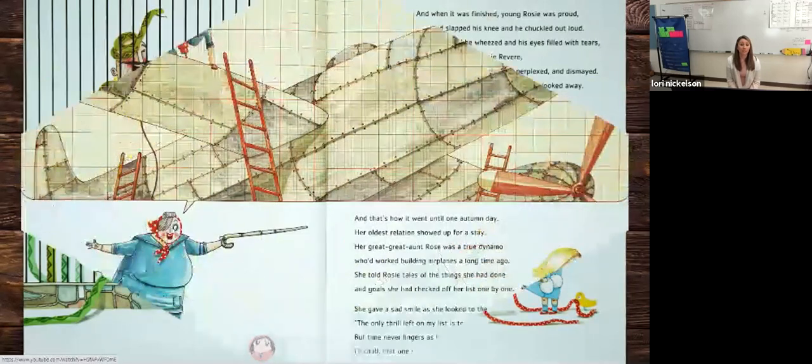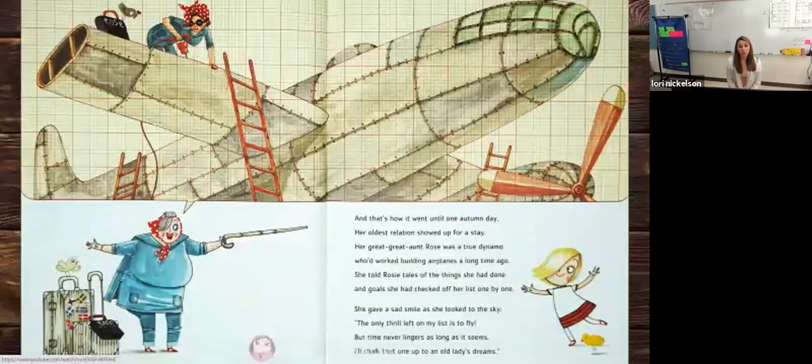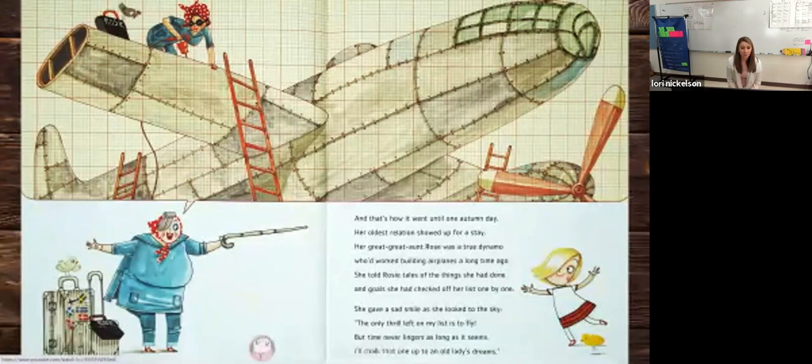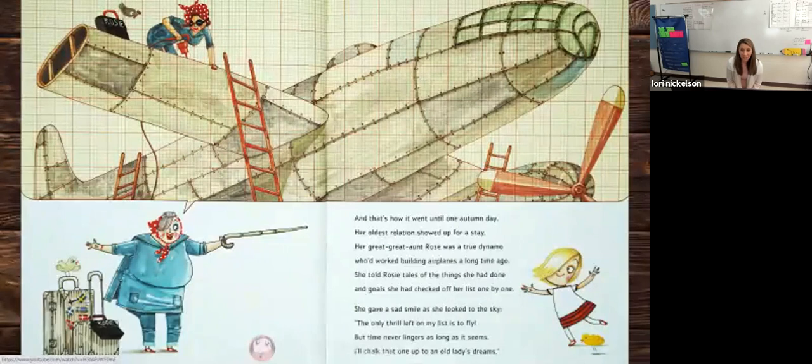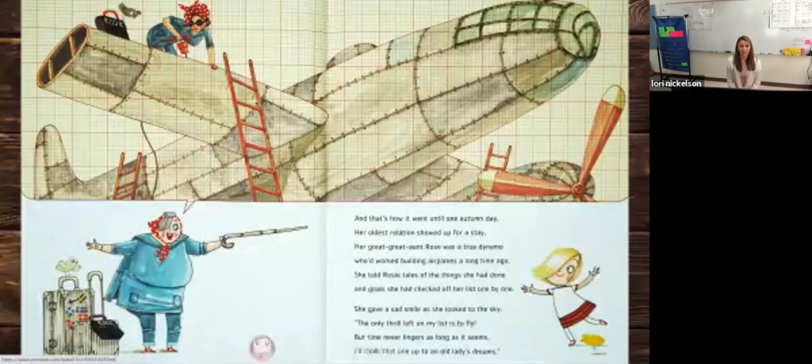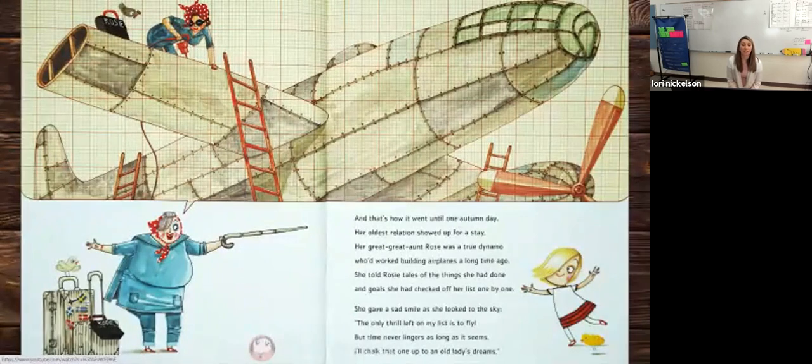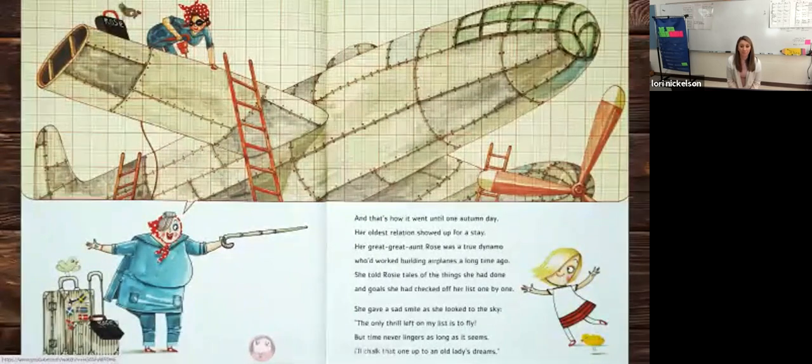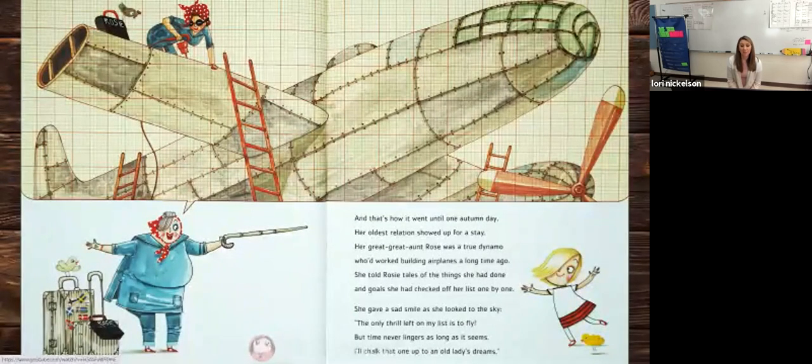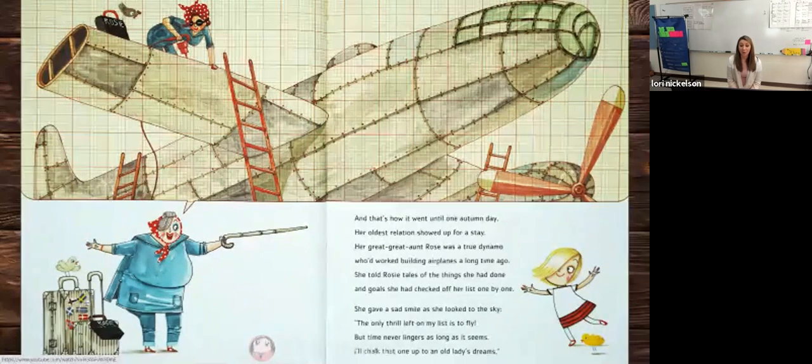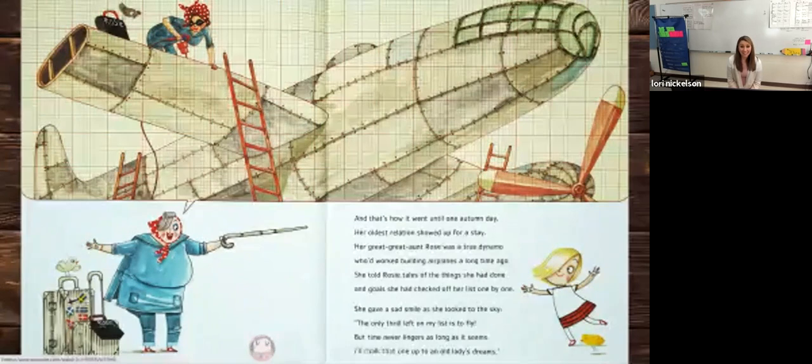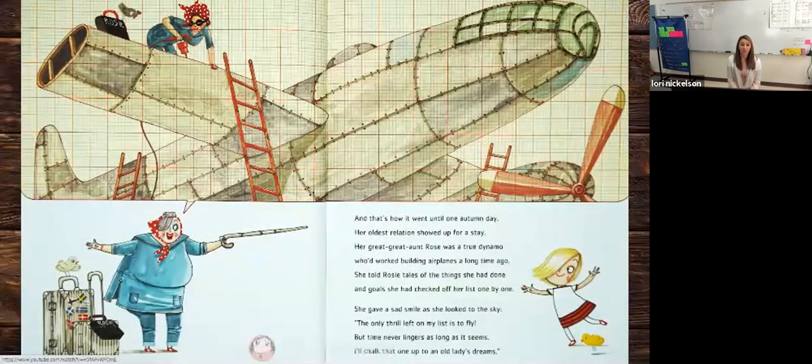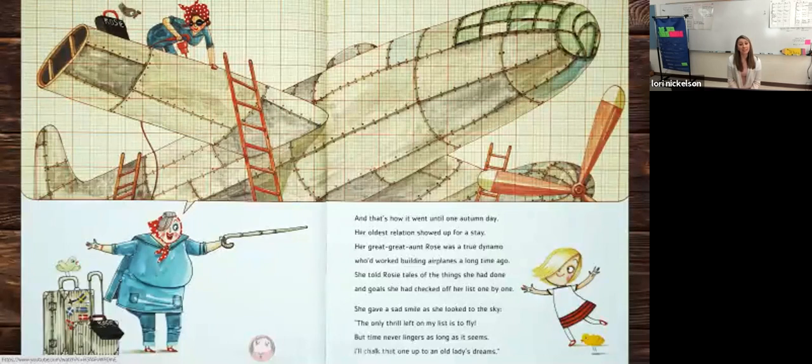And that's how it went until one autumn day, her oldest relation showed up for a stay. Her great-great-aunt Rose was a true dynamo who'd worked building airplanes a long time ago. She told Rosie tales of the things she had done and goals she had checked off her list one by one. She gave a sad smile as she looked to the sky. The only thrill left on my list is to fly. But time never lingers as long as it seems. I'll chalk that one up to an old lady's dreams.